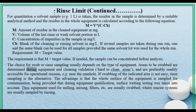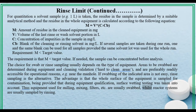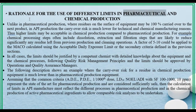The choice for swab or rinse sampling usually depends on the type of equipment. Areas to be swabbed are determined during equipment and cleaning validation. Hard-to-clean areas are preferably readily accessible for operational reasons, for example near the manhole. If swabbing of the indicated area is not easy, rinse sampling is the alternative. The advantage is that the whole surface of the equipment is sampled for contamination, provided that during equipment qualification surface wetting testing was taken into account. Thus, equipment used for milling, mixing, filters, etc., are usually swabbed, whilst reactor systems are usually sampled by rinsing.